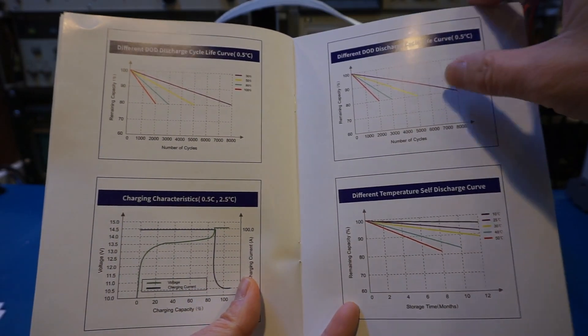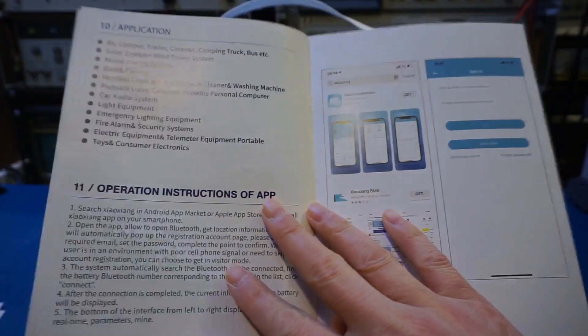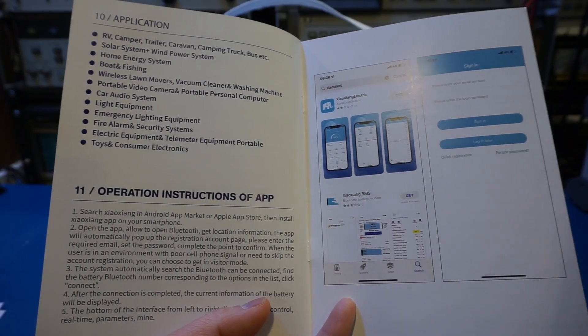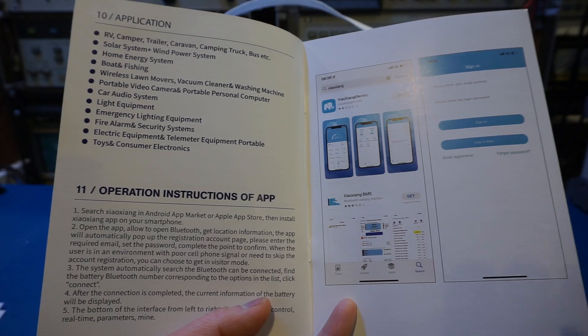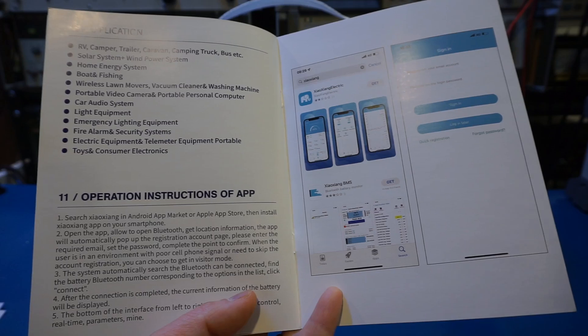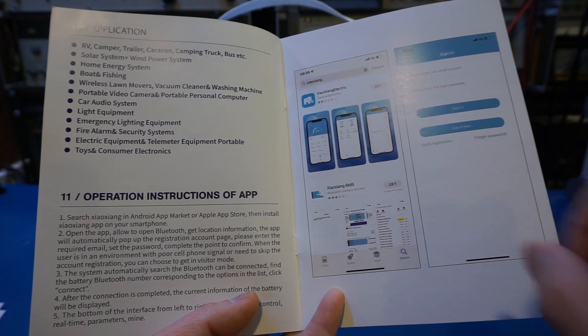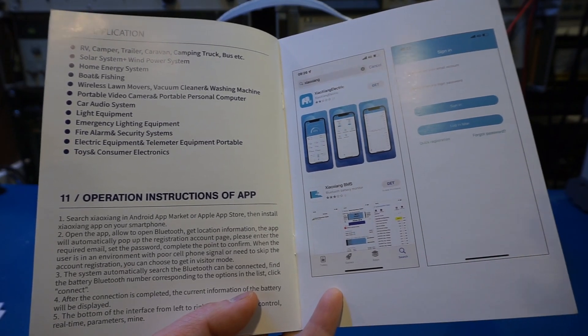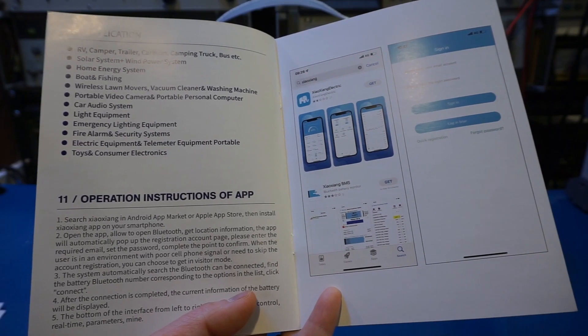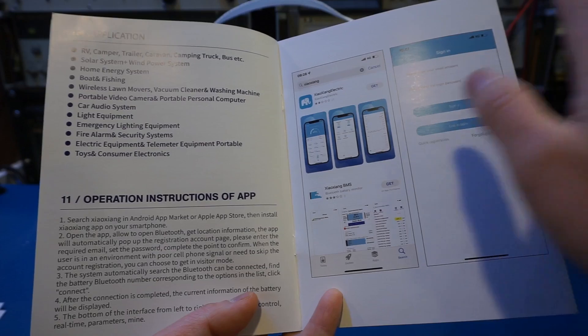Alright, let's see what else. Here is the phone app. I'm actually not sure why it's recommending this specific app as you can clearly see it's rated very poorly. I actually downloaded it but I don't like it because it asks you for registration. Anyway, VATRER actually has its own app which is quite decent, so I'm not sure why in the manual it recommends using this specific app.